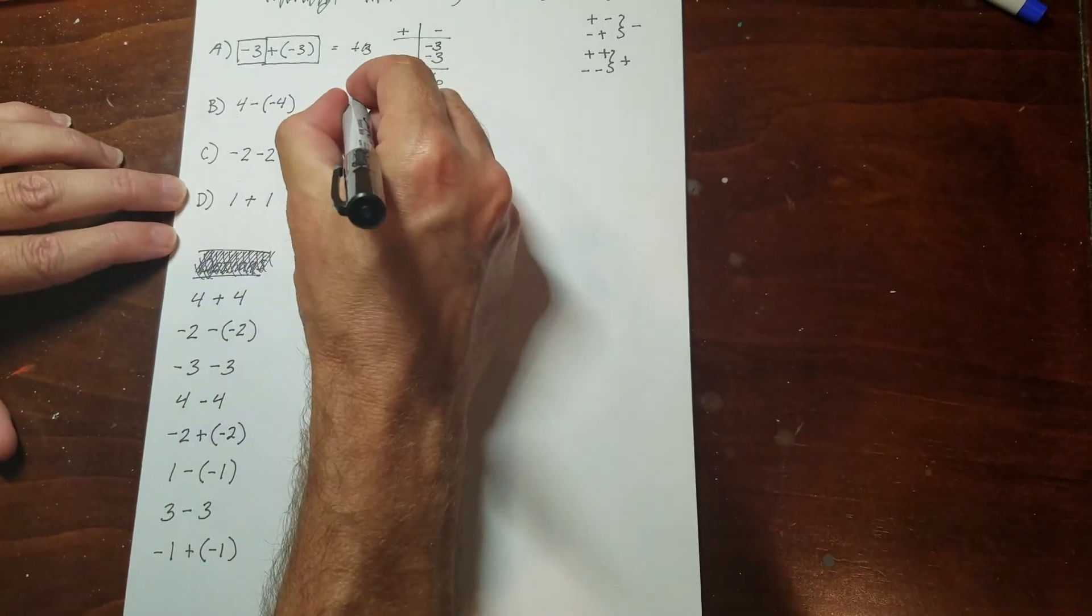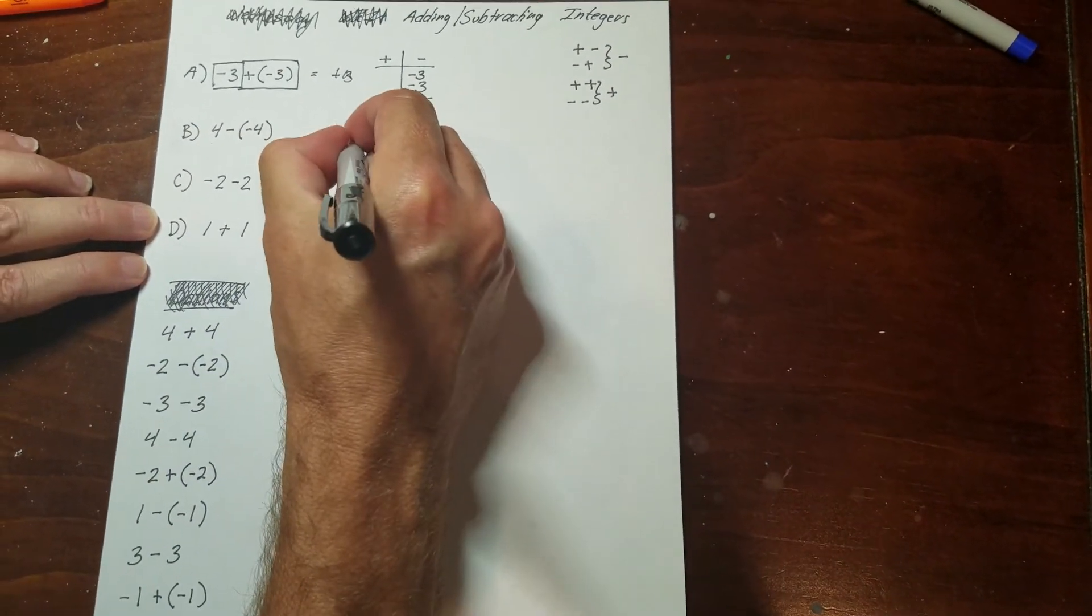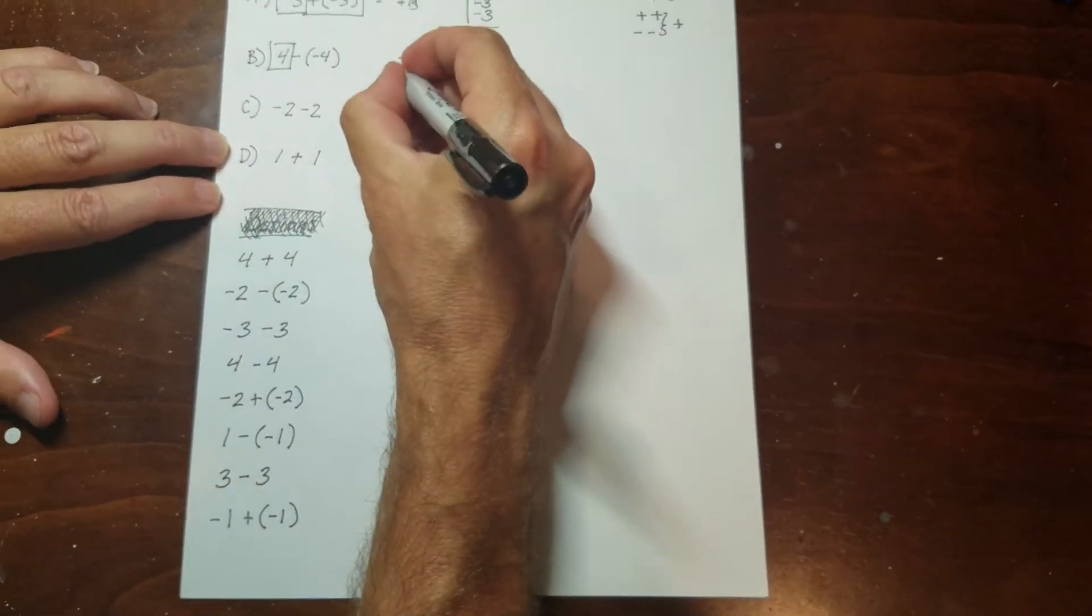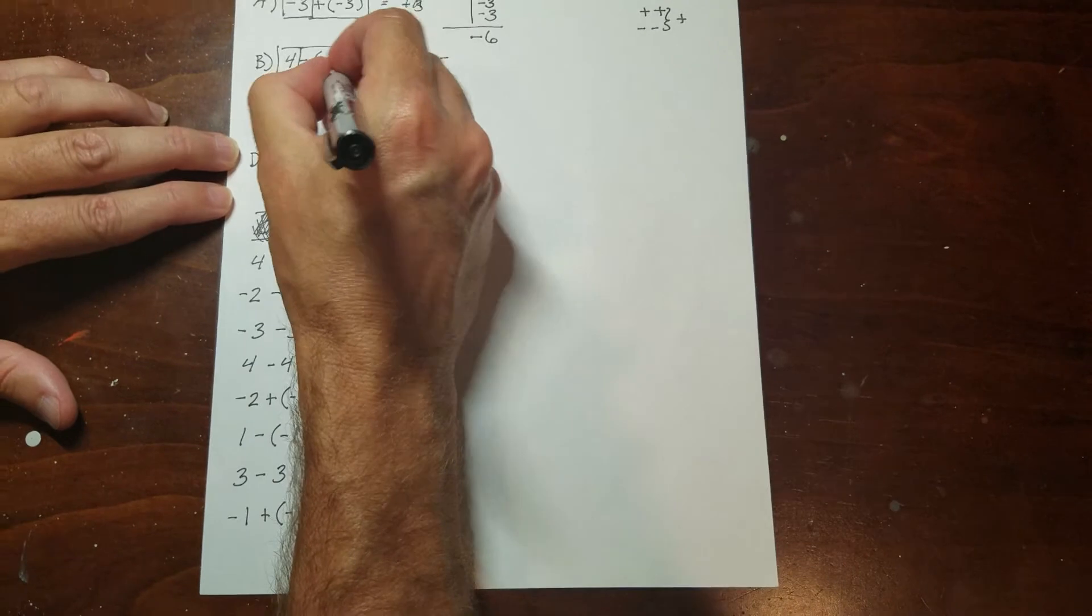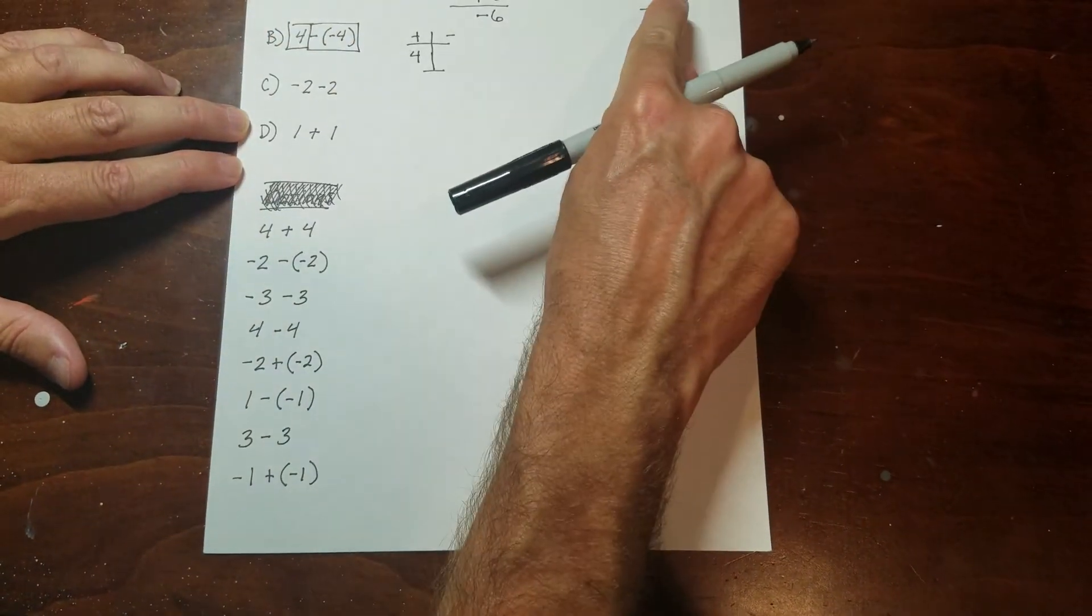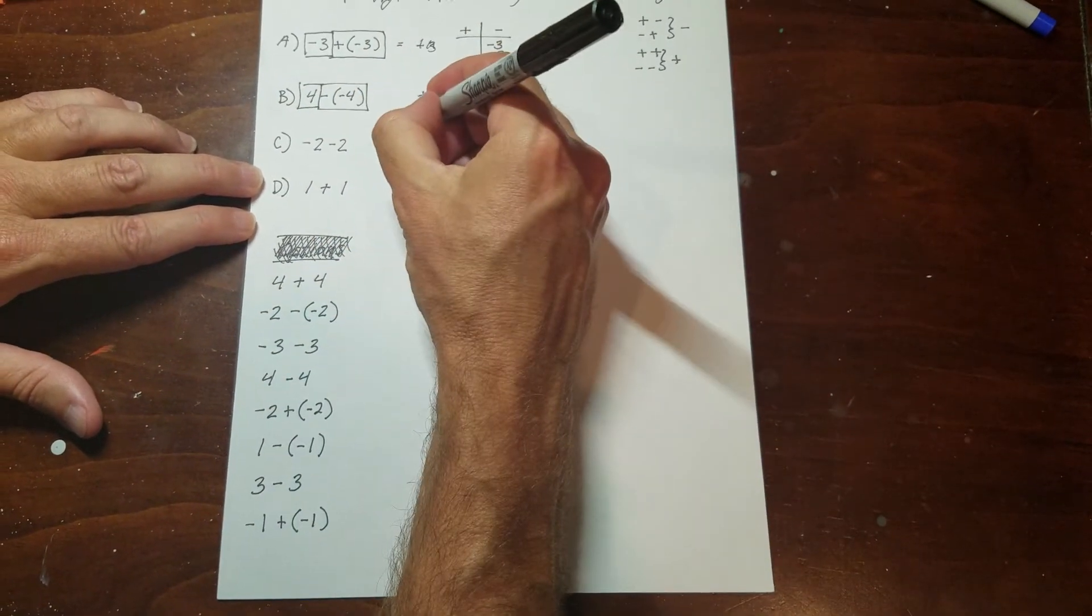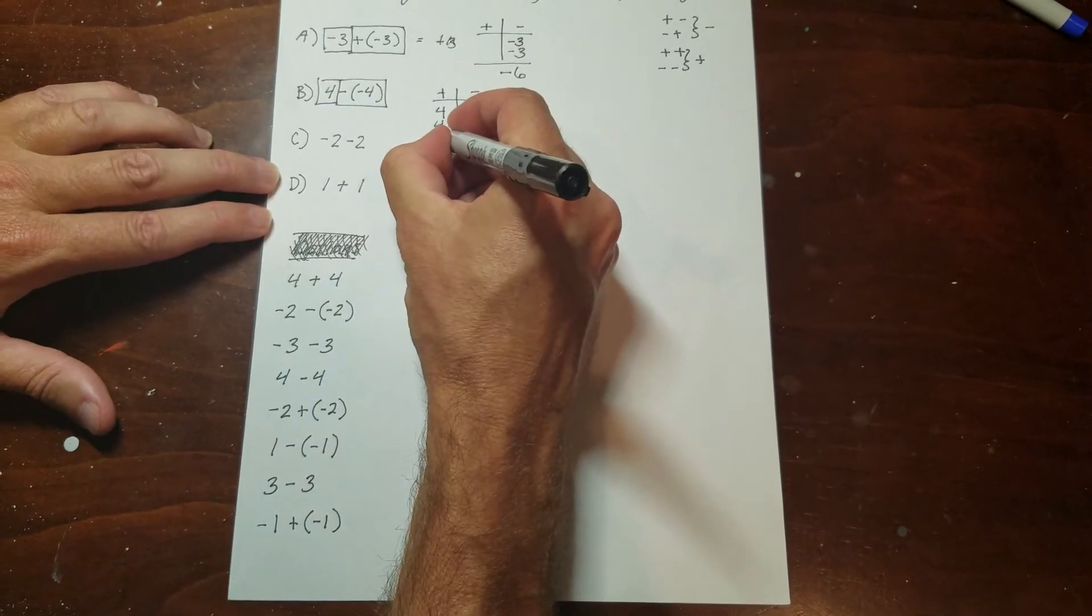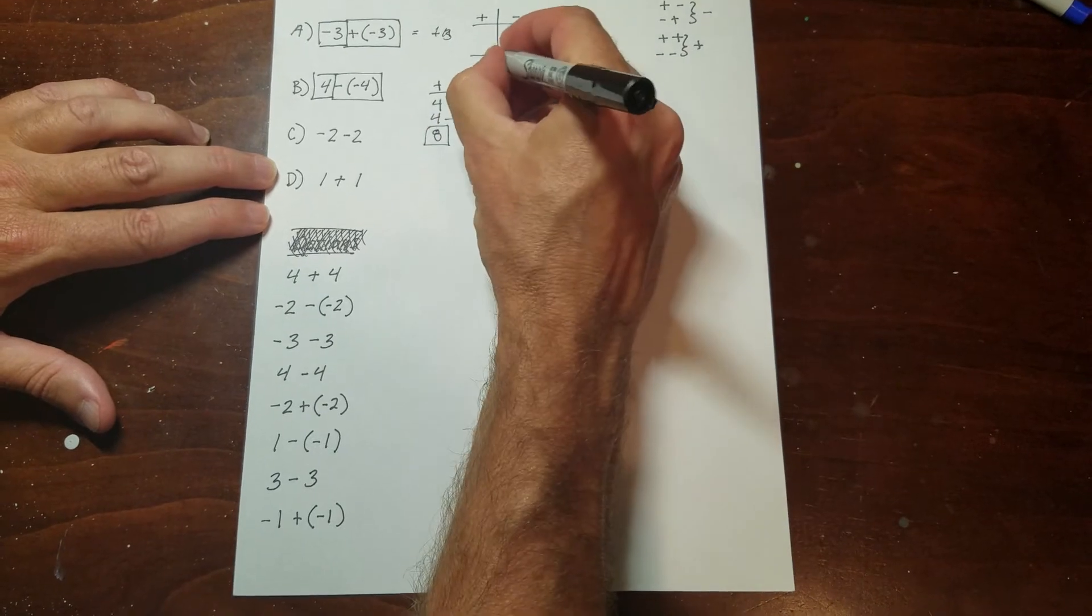This one over here, so I have that, which is a positive. And then I have a negative and a negative, which if I look over here, that's a positive 4 also. So if I look at this situation, the positives are going to win by 8. And then that's the answer.